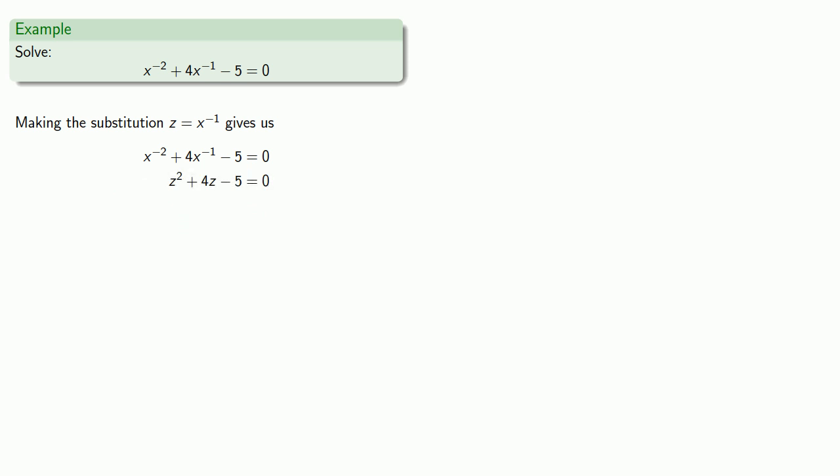So making the substitution z equals x to power negative 1 gives us z squared plus 4z minus 5 equals 0. And, well, maybe the universe is kind and gentle and we can solve this by factoring. And we got lucky this does actually factor. And so now we have product equal to 0. So we know that one of the factors must be 0. So either z minus 1 is 0 or z plus 5 is 0. Solving these gives us our two solutions, which we write down.